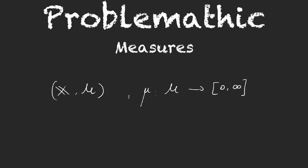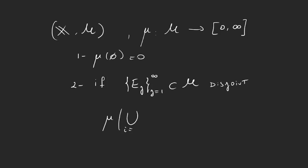And this function would be a measure if it satisfied two things. The first thing was that μ of the empty set was zero. And the second one was that if we have a sequence of elements in our sigma algebra that are disjoint, then the measure of the union is equal to the sum of the measures.